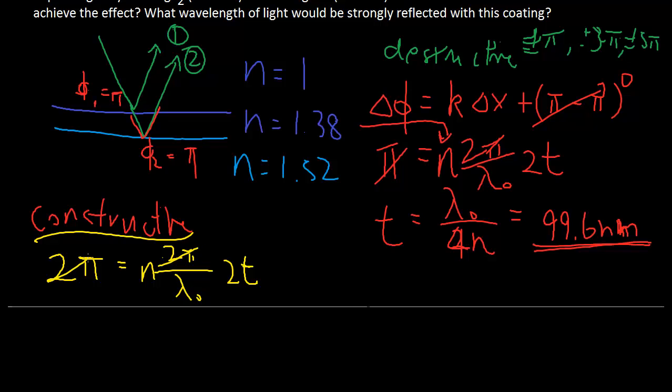So, the λ₀ here for constructive is 2nt, which works out to be 275 nm in air.